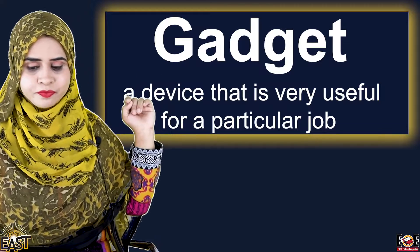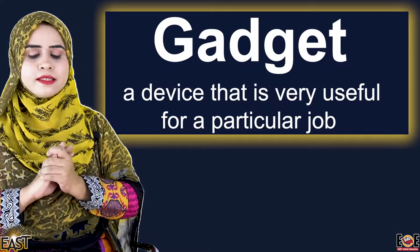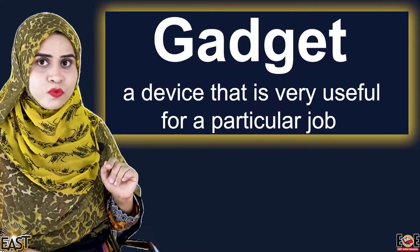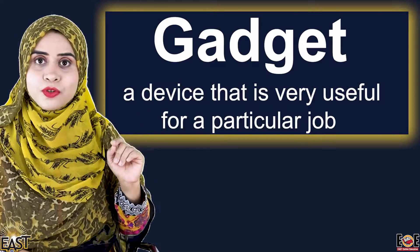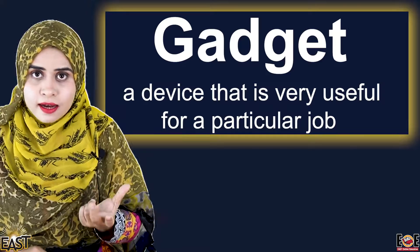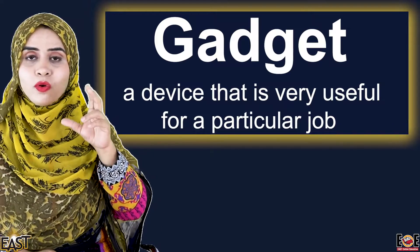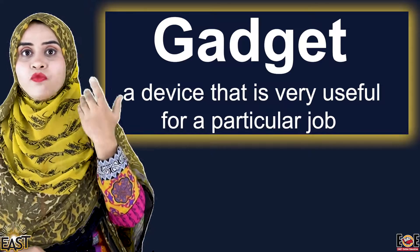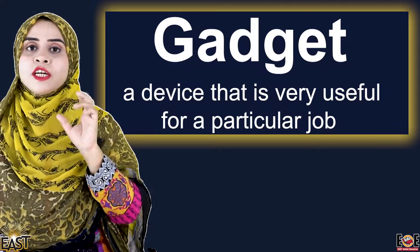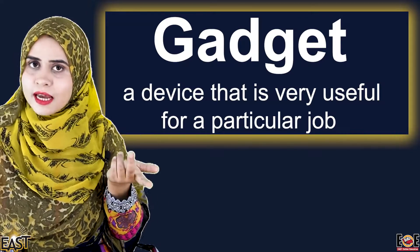The first word is: gadget. What are gadgets? The meaning is a device that is very useful for a particular job — یعنی کوئی ایسا آلہ جو کہ ایک particular function کے لیے بہت زیادہ effective ہو، جس کے ذریعے ہم کوئی ایک function perform کر سکتے ہیں — that is called a gadget.